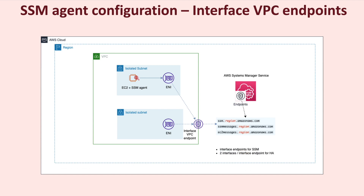This is what the network architecture would look like. We'll start by creating a VPC and two isolated subnets. By isolated, I mean that the subnets will have no other routes except for the default local route that's used to enable routing within the subnets of that VPC. We'll then proceed to create VPC interface endpoints for SSM.